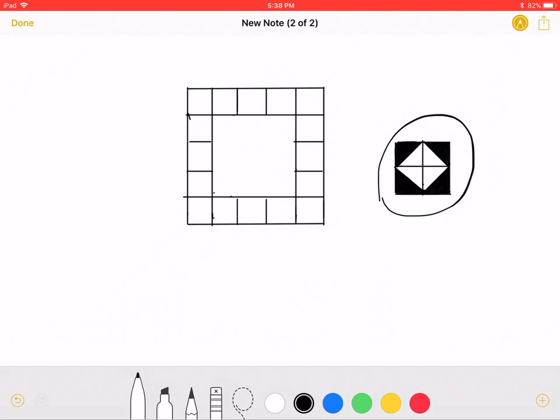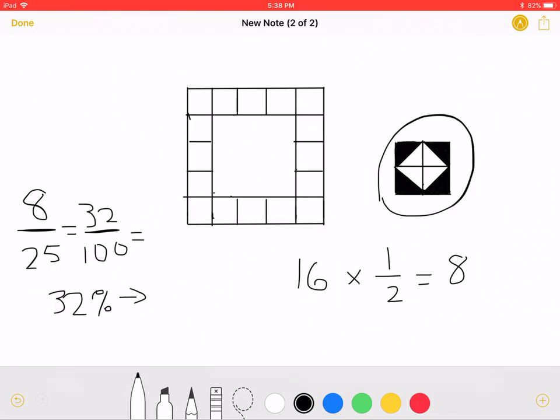By drawing diagonals in one of these smaller squares, we notice that the area of the black portion of the square is equal to half of the area of that square. Because we have 16 squares like this, we must multiply 16 to 1 half to get an answer of 8. And because the problem is asking for the percentage of this black out of the entire area of the square, we must do 8 over 25, which is equal to 32 over 100, which is equal to 32%, which is answer choice D.